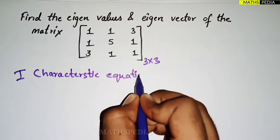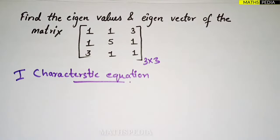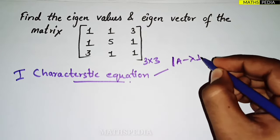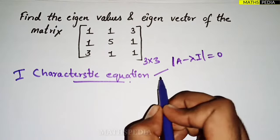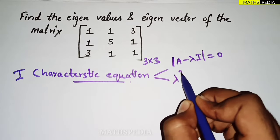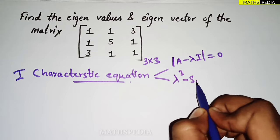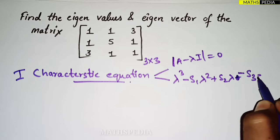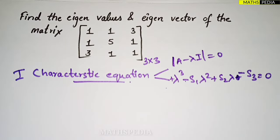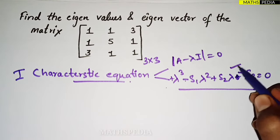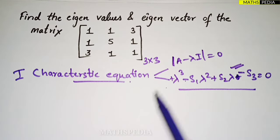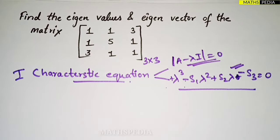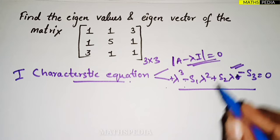There are two methods to find the characteristic equation. The first is the traditional method: det(A − λI) = 0. The second is the formula method: λ³ − S1·λ² + S2·λ − S3 = 0, which follows a plus-minus-plus-minus sign pattern. We'll use the easy formula method first, then verify with the traditional method.